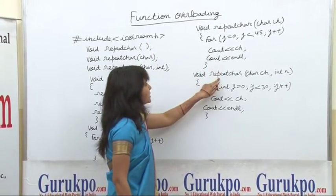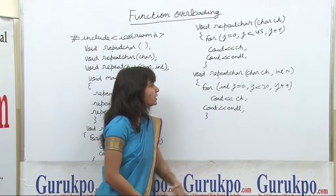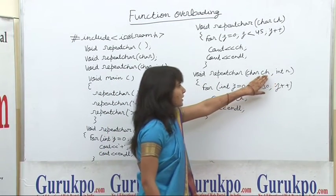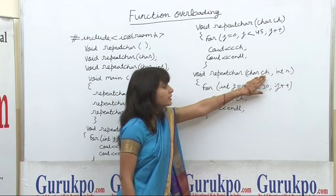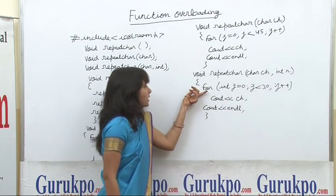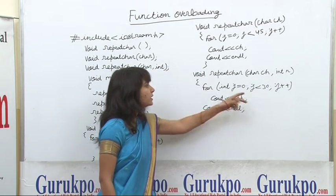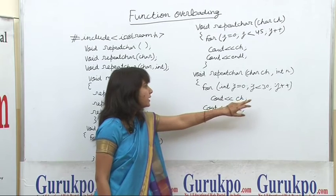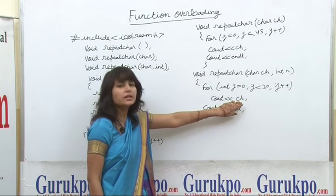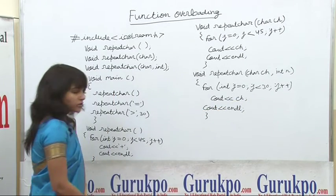The third is the void repeat_character function with two arguments: one is character type and the second is integer type. Here the for loop is executed 30 times, and each time it displays the character.